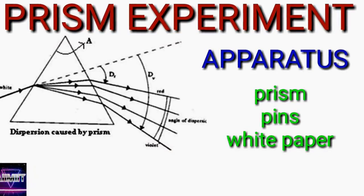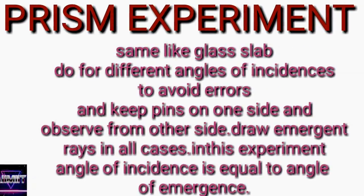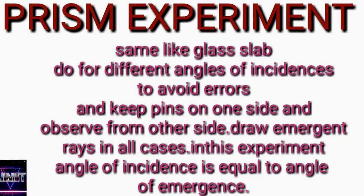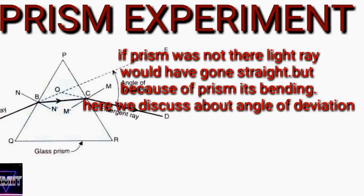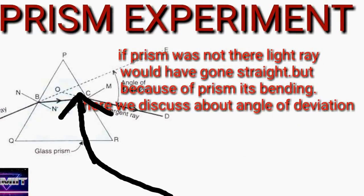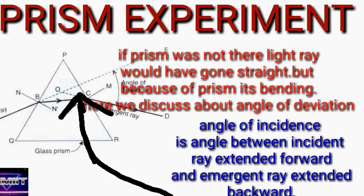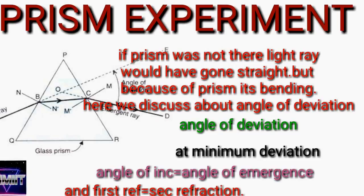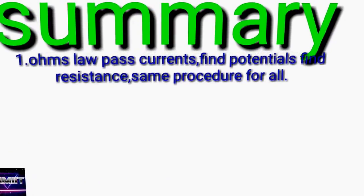Coming to the prism experiment. The apparatus: prism, pins, white paper. Same as before — keep pins on one side on the incident ray and see from the other side. Wherever you see the pins, draw the emergent ray. Here we will get that the angle of incidence is equal to the angle of emergence. Unlike the glass slab where incident and emergent rays are parallel, in the prism, the incident angle and emergent angle are equal. Do it for five times — in all five cases, incident angle will equal emergent angle. All angles of incidence should be between 30 degrees and 60 degrees. If the prism were not there, the light ray would have gone straight. Because of the presence of the prism, the light ray bends by some angle — that is called the angle of deviation. At the minimum deviation position, the angle of incidence equals the angle of refraction, and the first refraction equals the second refraction.